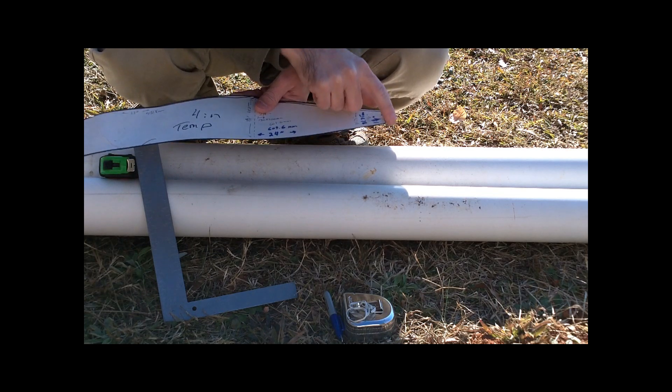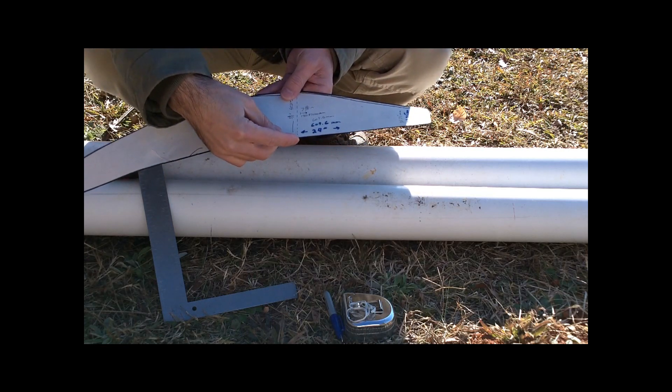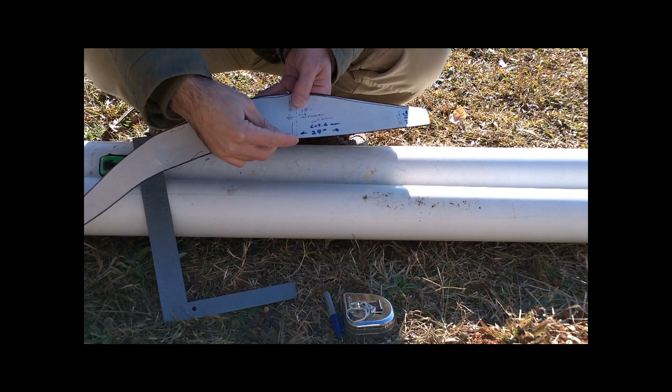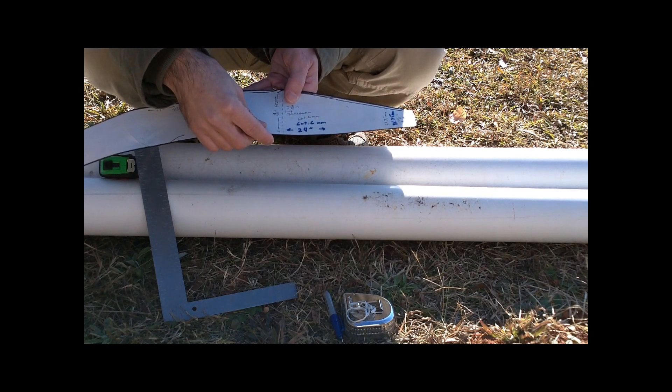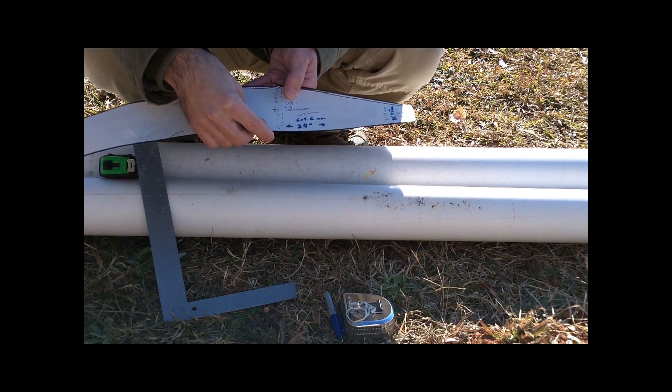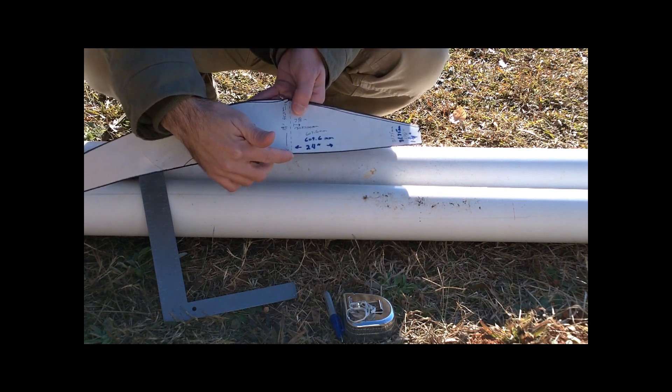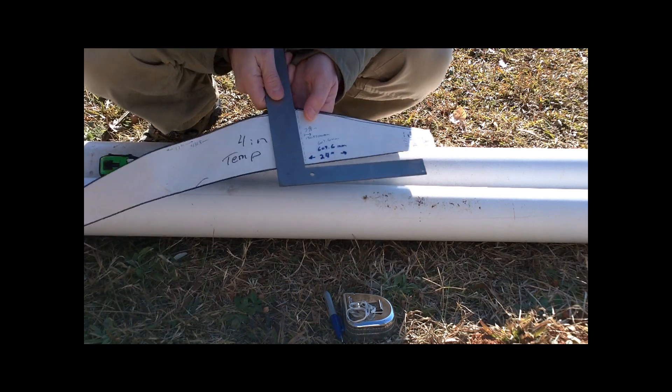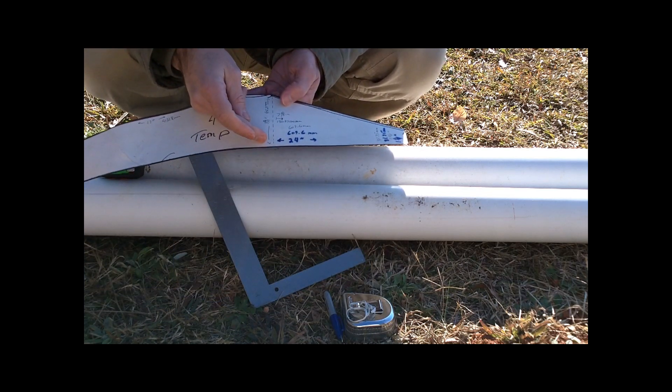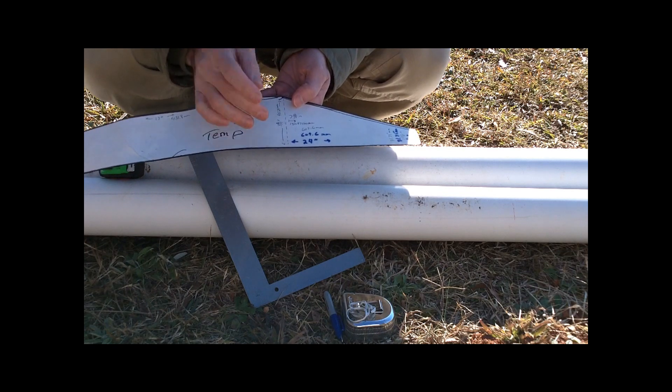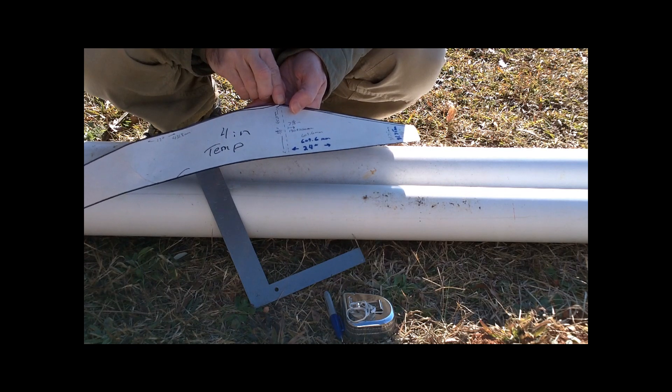From the 1 and 1/4 inch mark, I went along and stopped at 7 and 1/8 inch from one end, which is 180.975 millimeters. From there, I made another 90-degree line straight up, going up a total of 3 and 3/4 inch from the bottom to the peak, which is 95.25 millimeters.